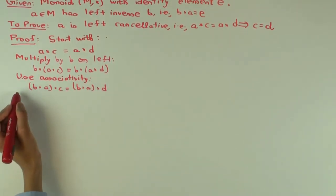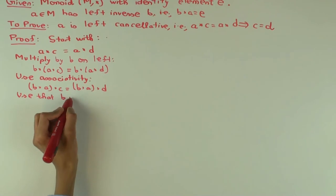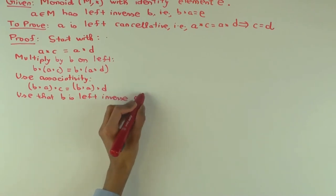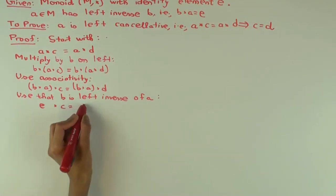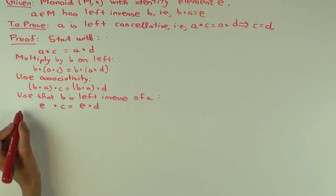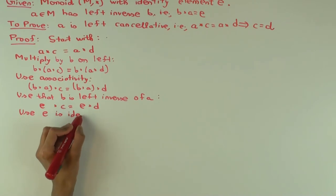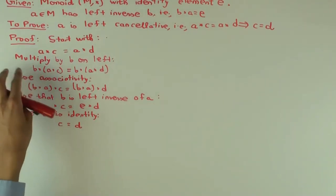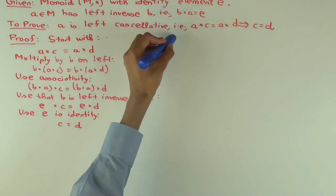Now we use the left inverse. So we get E star C equals E star D. Now use that E is the identity to get C equals D. I'm writing it in many steps, but you can see immediately if you think about it - you multiply by the inverse B, the B and A cancel to E, and you're just left with C and D. So what's the upshot of all this? What's the moral of this story?